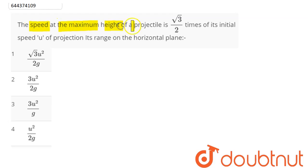maximum height of a projectile is √3/2 times its initial speed u of projection. Its range on the horizontal plane is? Here the question says that the speed at the point of projection is u, and at the highest point we have the speed as √3/2 times u. So it is asking for the range of the projectile.